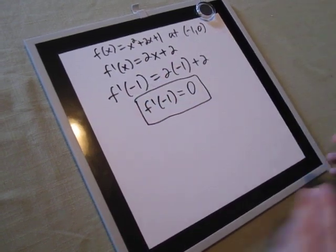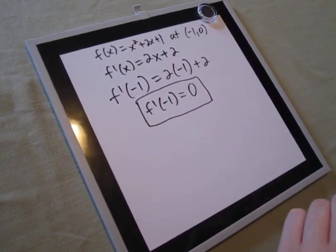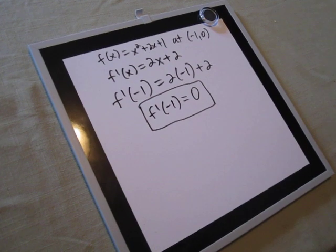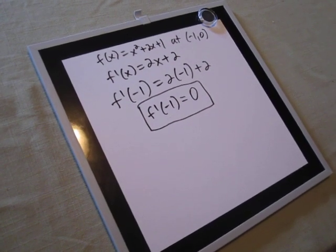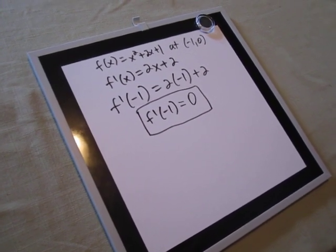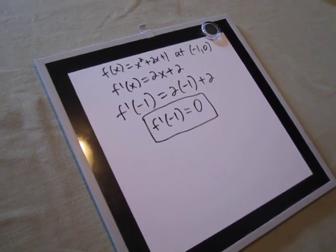That is how we use the derivative to find the slope of the curve f(x) = x² + 2x + 1 at the point (-1, 0).